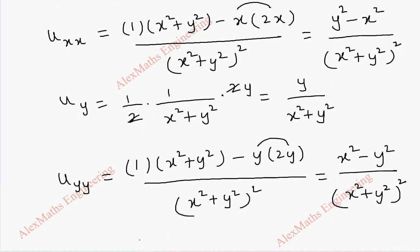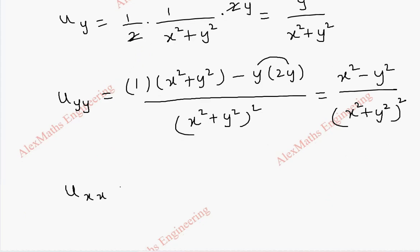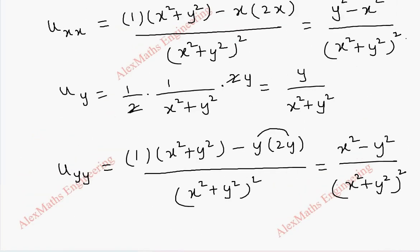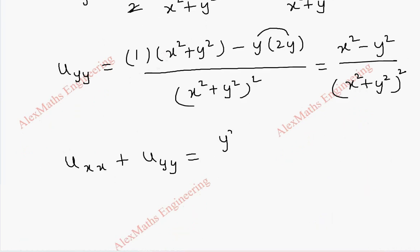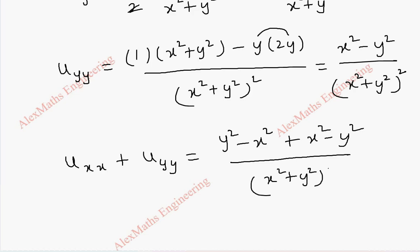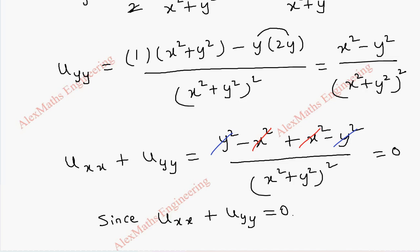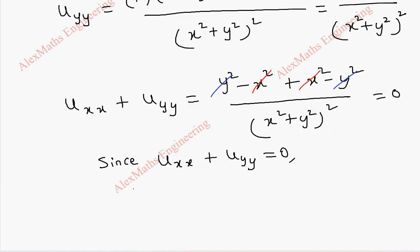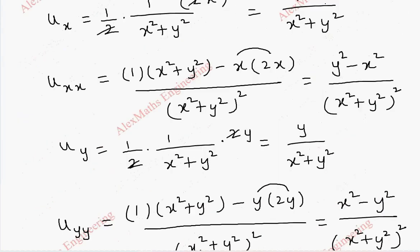We are going to add uxx and uyy. The numerator of uxx is y square minus x square, and the numerator of uyy is x square minus y square. Both have a common denominator x square plus y square whole square. In the numerator, minus x square plus x square cancels, and y square minus y square cancels, so it totals to 0. Since uxx plus uyy equals 0, it satisfies the Laplace equation and u is harmonic. So we have completed the first part.